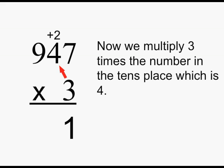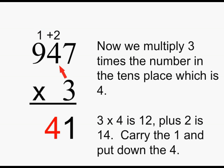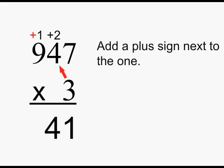Now we multiply 3 times the number in the tens place, which is 4. 3 times 4 is 12, plus 2 is 14. Carry the 1 and put down the 4. Add a plus sign next to the 1.